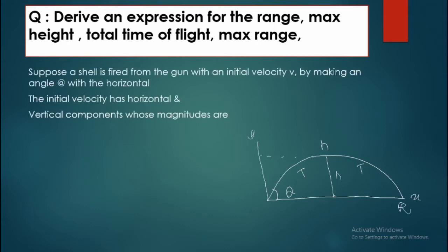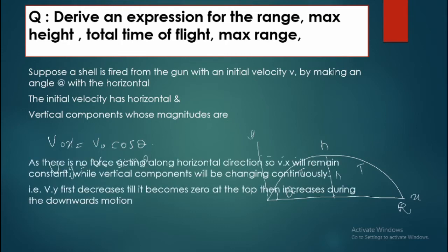Suppose a shell is fired from a gun with an initial velocity V₀ making an angle theta with the horizontal. There will be two components: along the x-axis the velocity is V₀x = V₀ cos theta, and the other component is V₀y = V₀ sin theta along the y-axis.